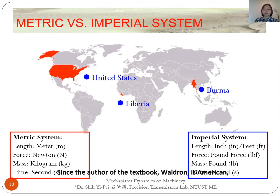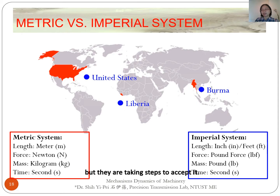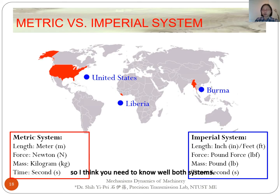Since the author of the textbook, Walden, is American, the textbook uses the imperial system. We should point out that even those countries do not use the metric system, but they are taking steps to accept it. However, since you need to do business with the United States and other countries, you need to know both systems well.